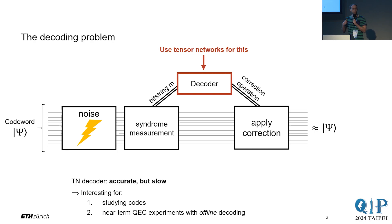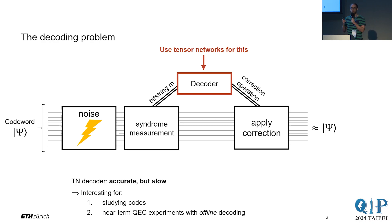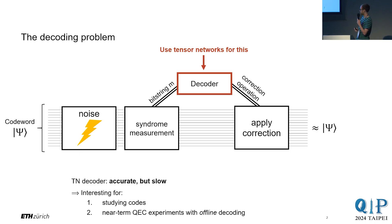Also importantly, for near-term error correction experiments when you don't do any sort of logical non-Clifford gates — essentially quantum memory experiments — oftentimes you can do the decoding purely offline, meaning in post-processing. So you don't really care that much about the speed of the decoder here.